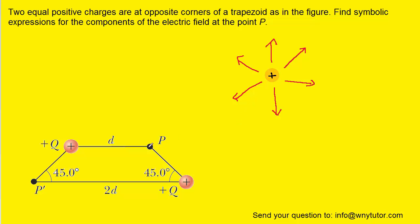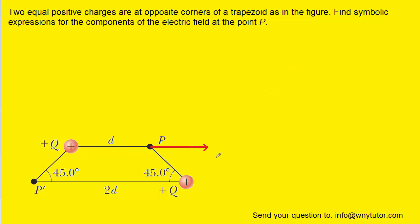For example, if we look over here at point P and examine this charge, we would see that because this charge is positive, it will be producing electric field lines pointing away from that positive charge. Over here at point P, away from that positive charge would be pointing exactly to the right in the positive x direction. So let's go ahead and draw an electric field line pointing to the right, and we can label this electric field line E1.